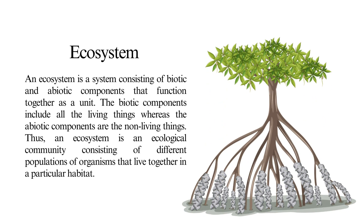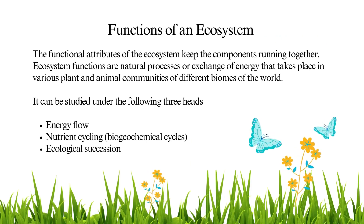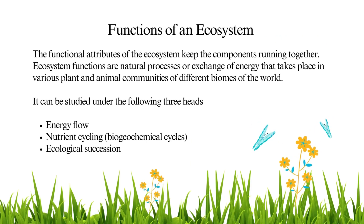a system consisting of biotic and abiotic components that function together as a unit. The biotic components include all the living things, whereas the abiotic components are the non-living things. Thus an ecosystem is an ecological community consisting of different populations of organisms that live together in a particular habitat.